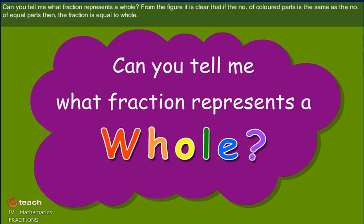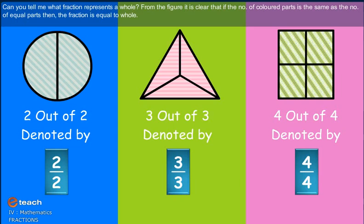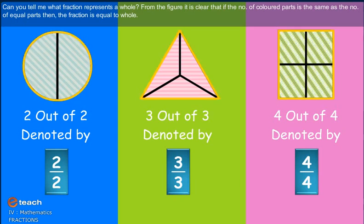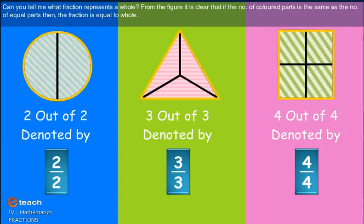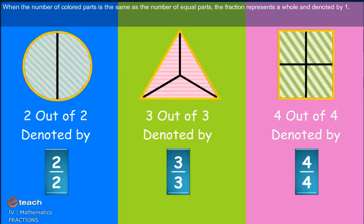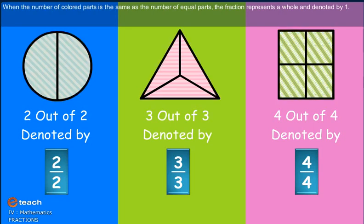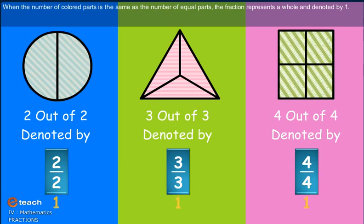Can you tell me what fraction represents a whole? From the figures, it is clear that the number of colored parts is the same as the number of equal parts. Then the fraction is equal to whole. When the number of colored parts is the same as the number of equal parts, the fraction represents a whole and is denoted by one.